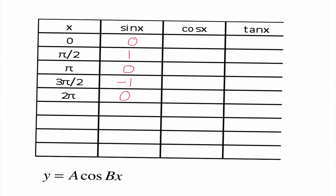For cosine: cosine of 0 is 1, cosine of pi over 2 is 0, cosine of pi is -1, cosine of 3 pi over 2 is 0, and cosine of 2 pi is 1. I'm not going to worry about tangent in this lecture — we're just going to talk about sine and cosine here.